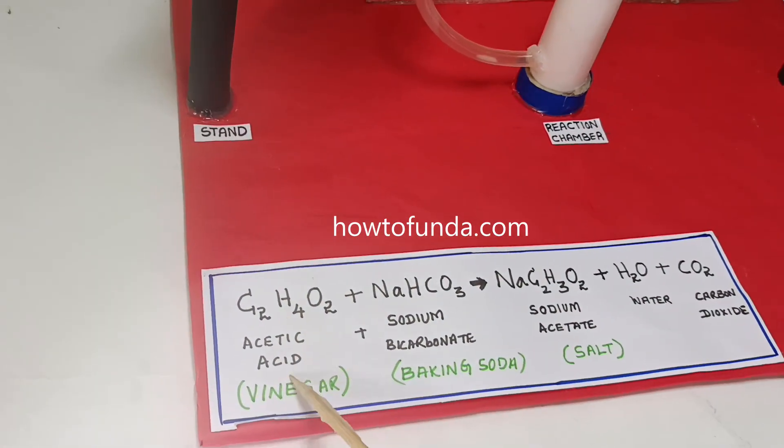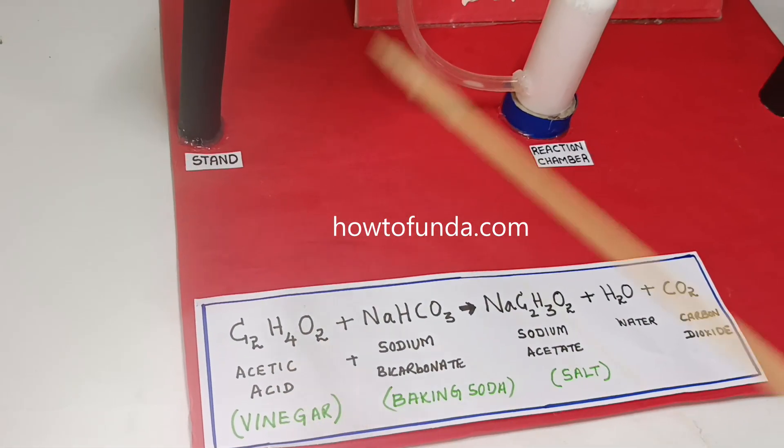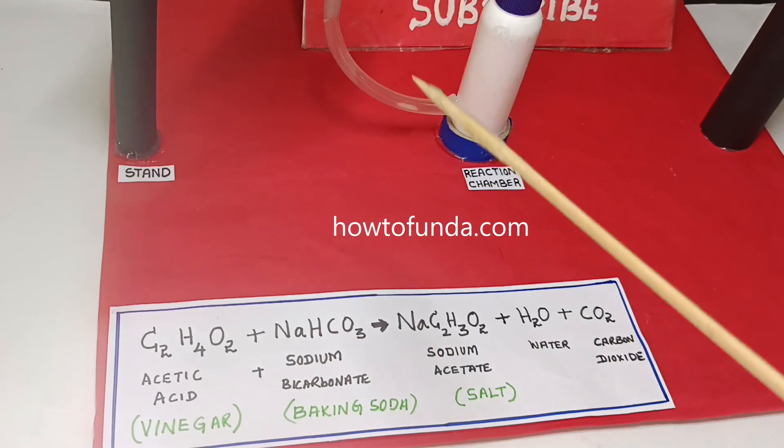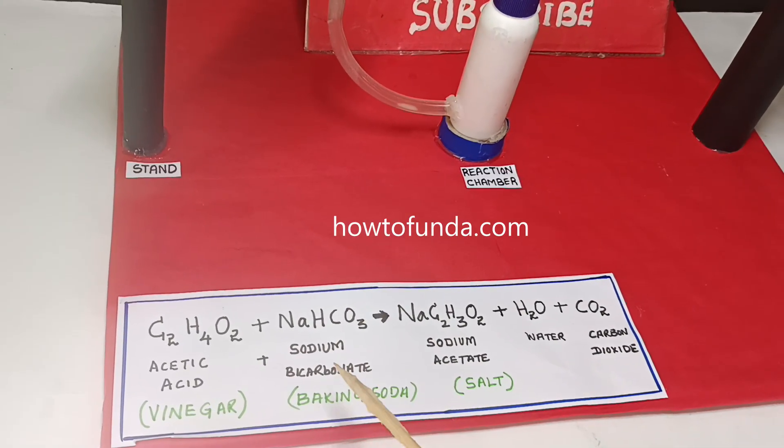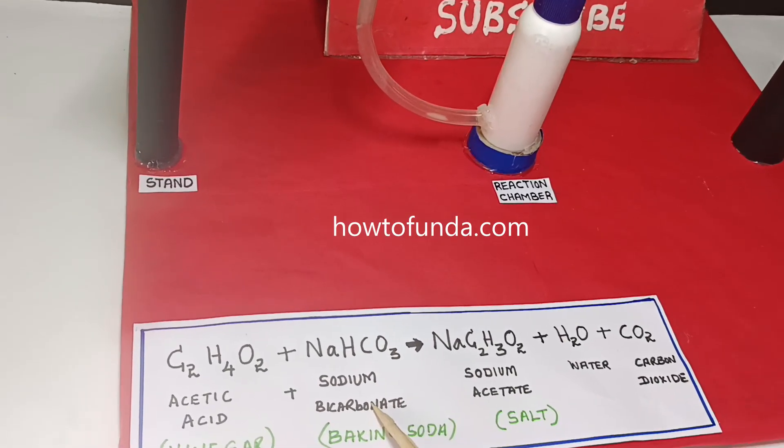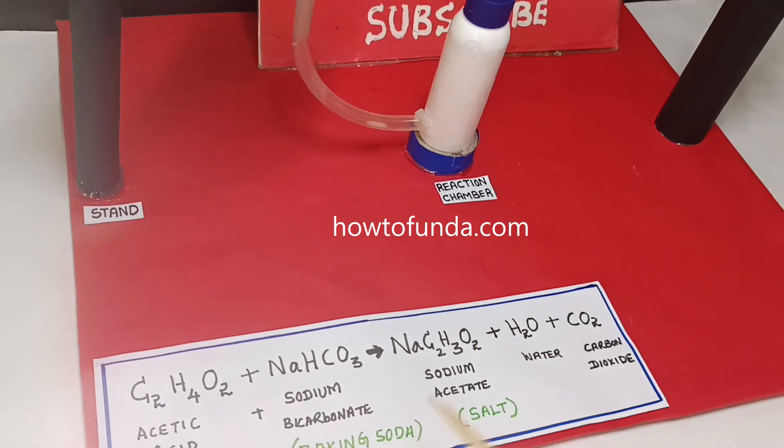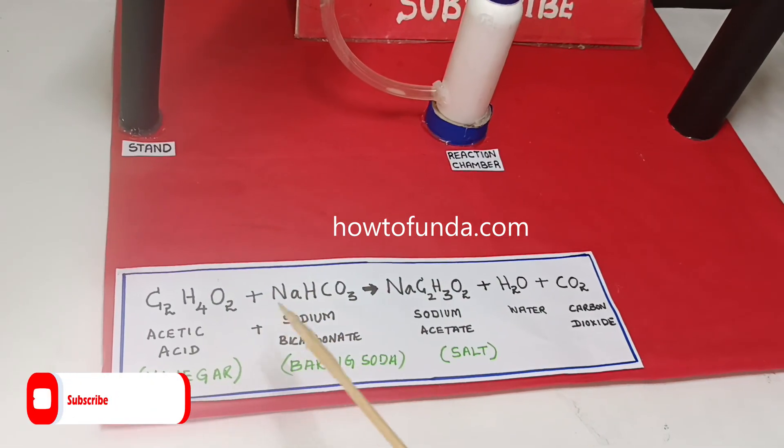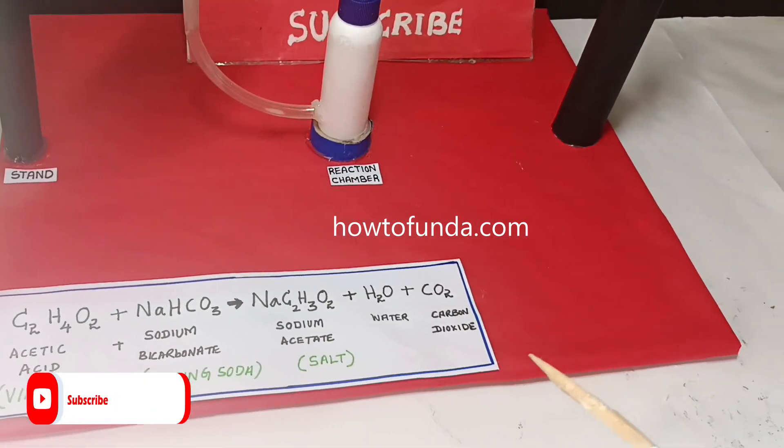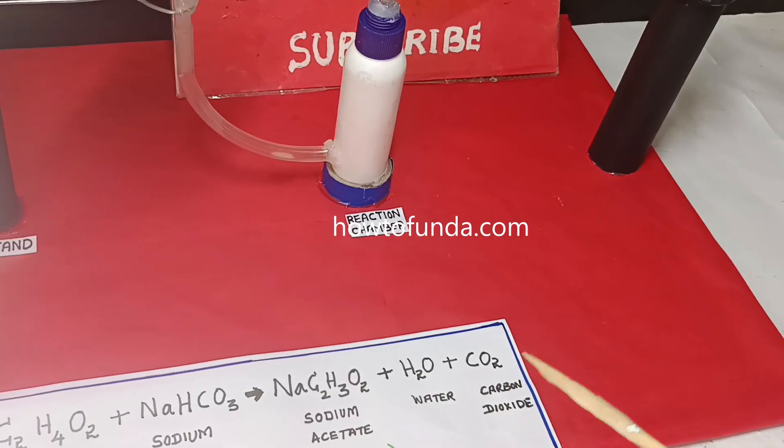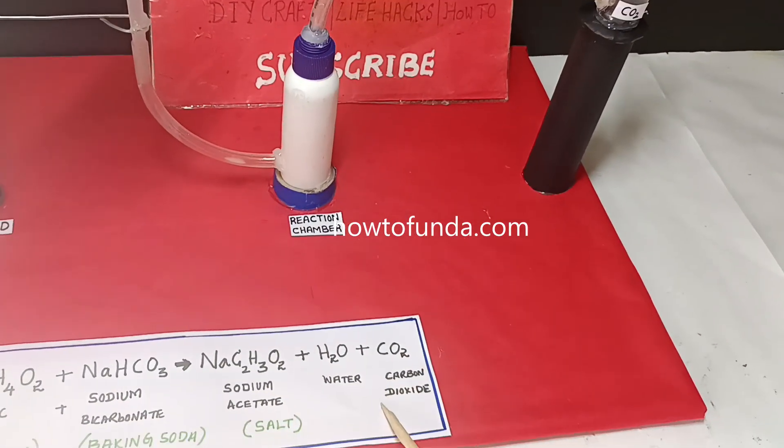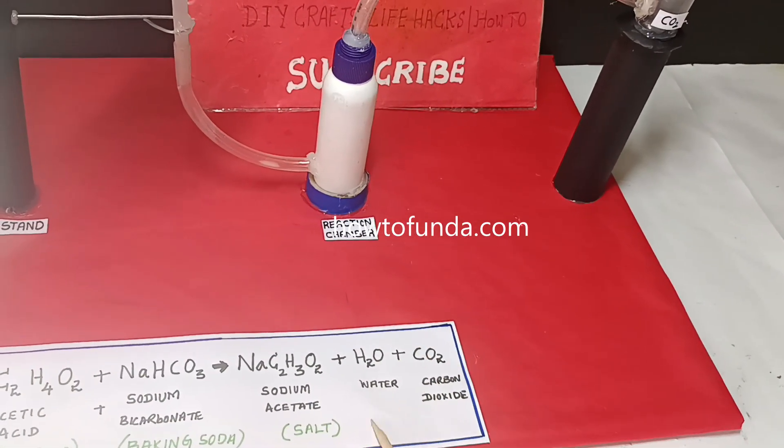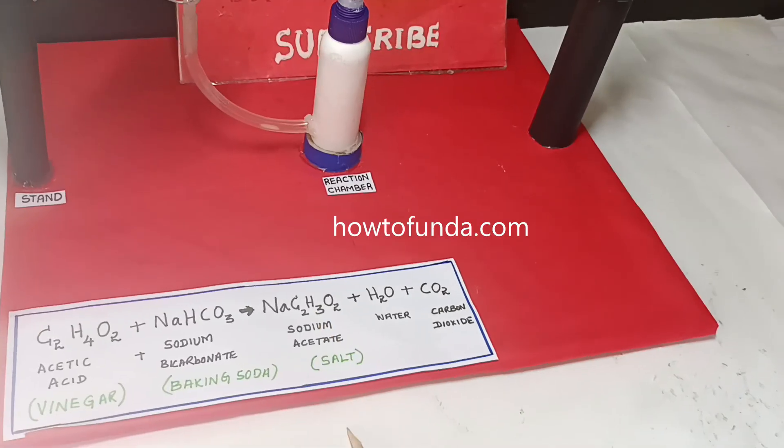We are going to use vinegar, which is acetic acid (C2H4O2), plus baking soda, which is sodium bicarbonate (NaHCO3). When we mix vinegar with baking soda, it generates carbon dioxide gas and also produces water as well as salt.